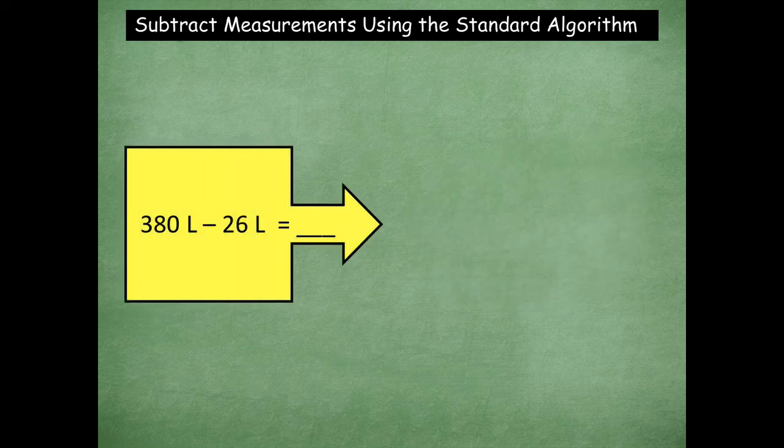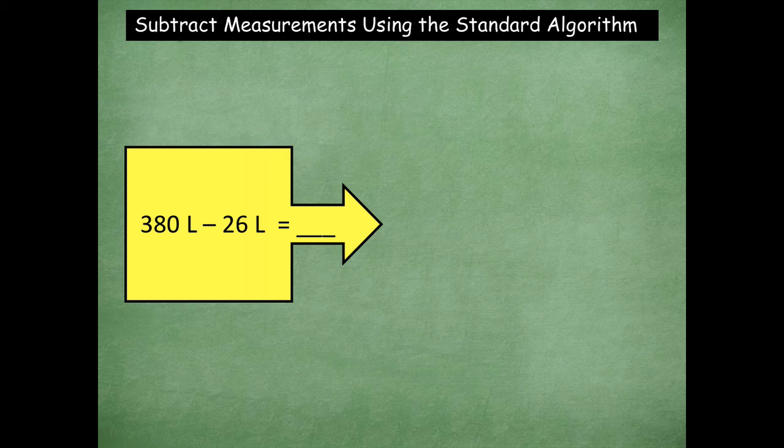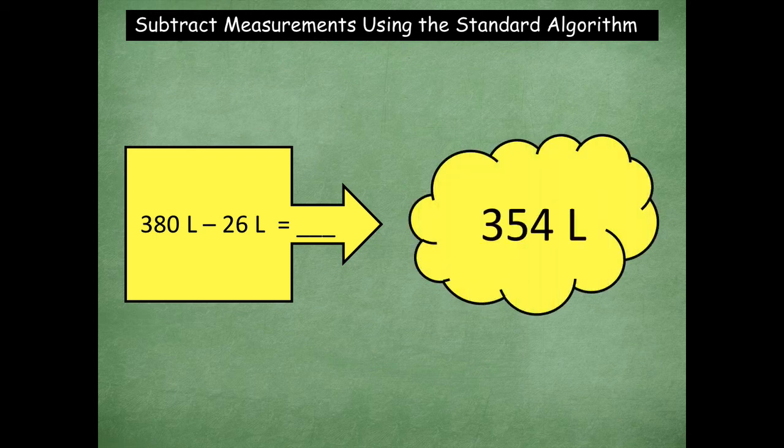Here's our next problem. 380 minus 26. Now notice this is really close to our last problem that we just did. The first number has a different digit that you're starting with. This one has 3 in the hundreds, but the process is going to still be the same. So go ahead and solve this one and click play when you're ready to see the answer. Okay, here we go. 354 liters is the correct answer for this problem.